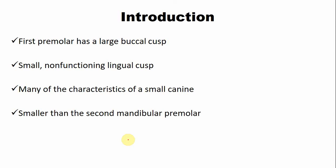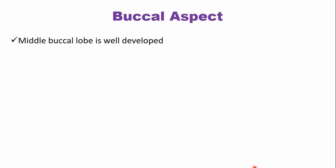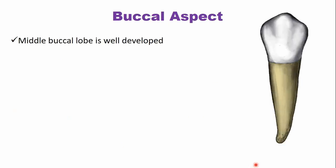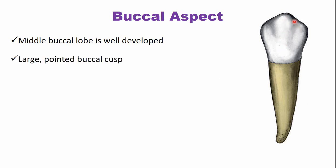The opposite is true for the maxillary first premolar, which is larger compared to the maxillary second premolar. From the buccal aspect, the middle buccal lobe is well developed — this portion is the middle buccal lobe, and it forms the buccal ridge. A similar labial ridge is present in the canine. There is a large, pointed buccal cusp.